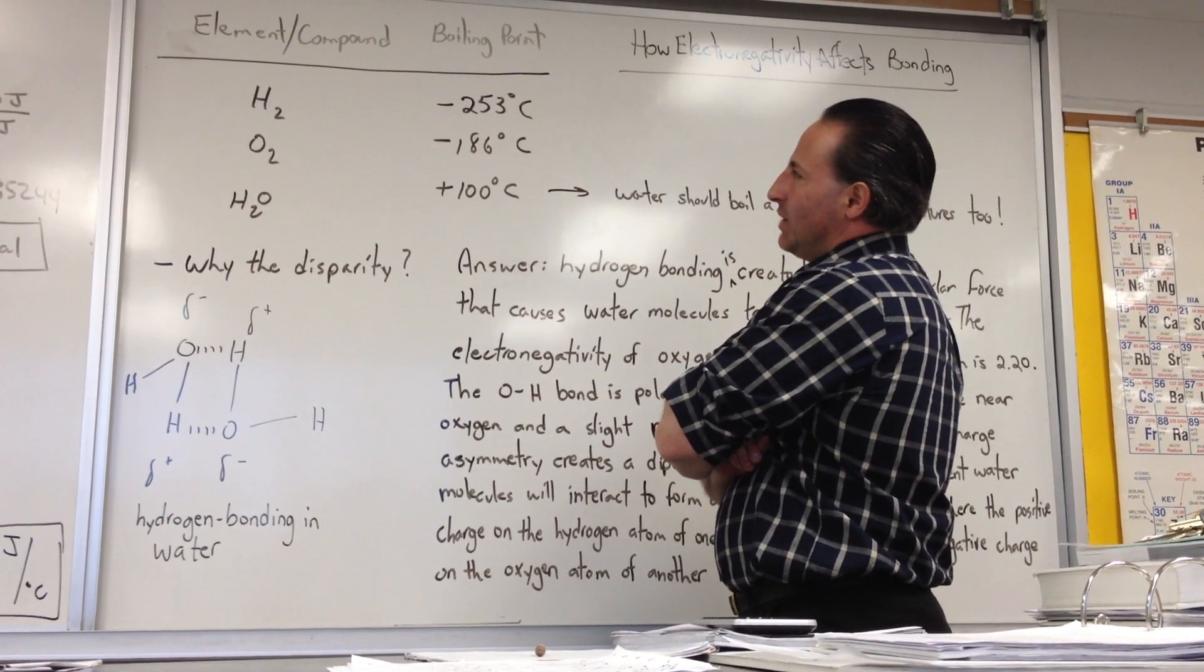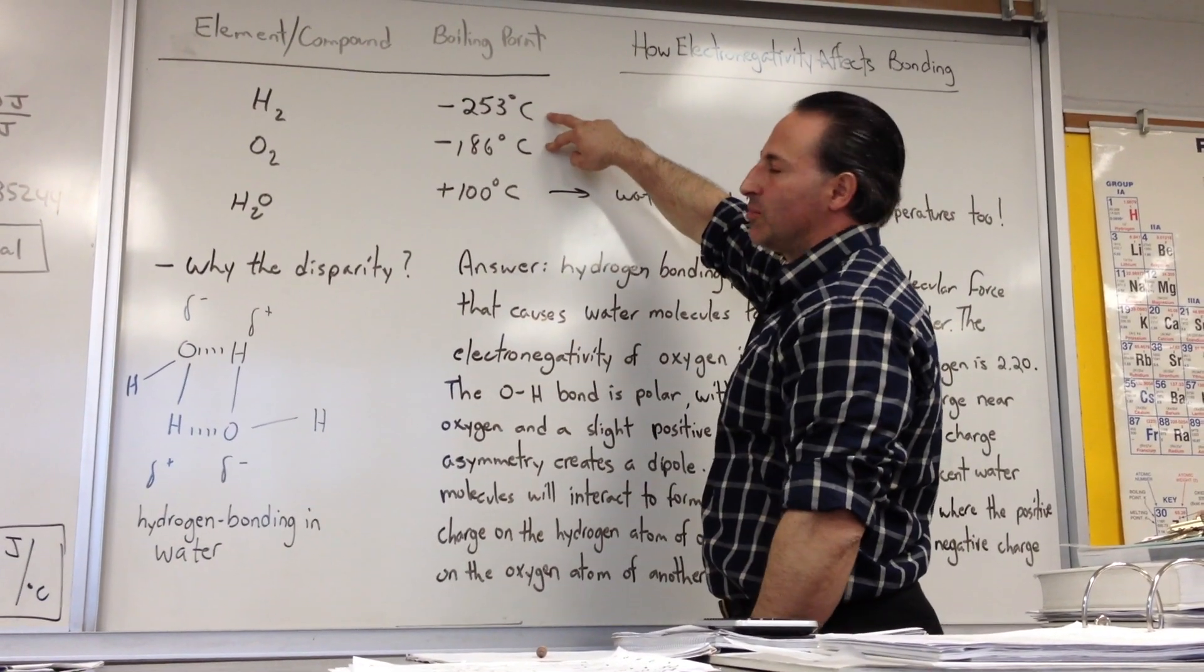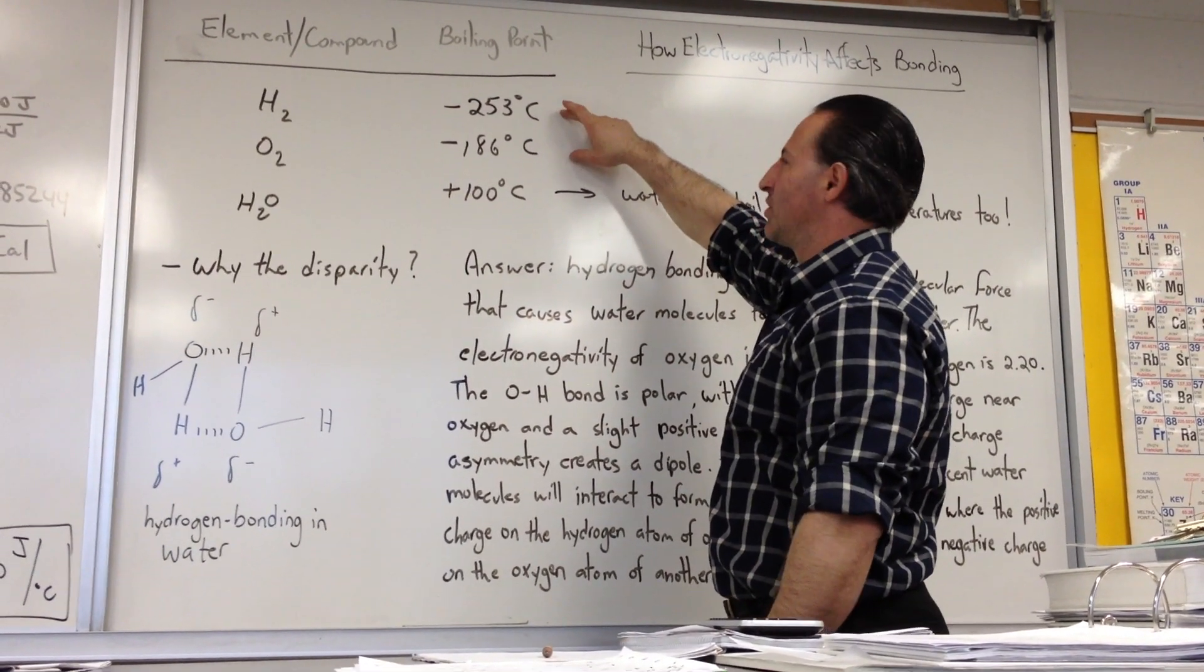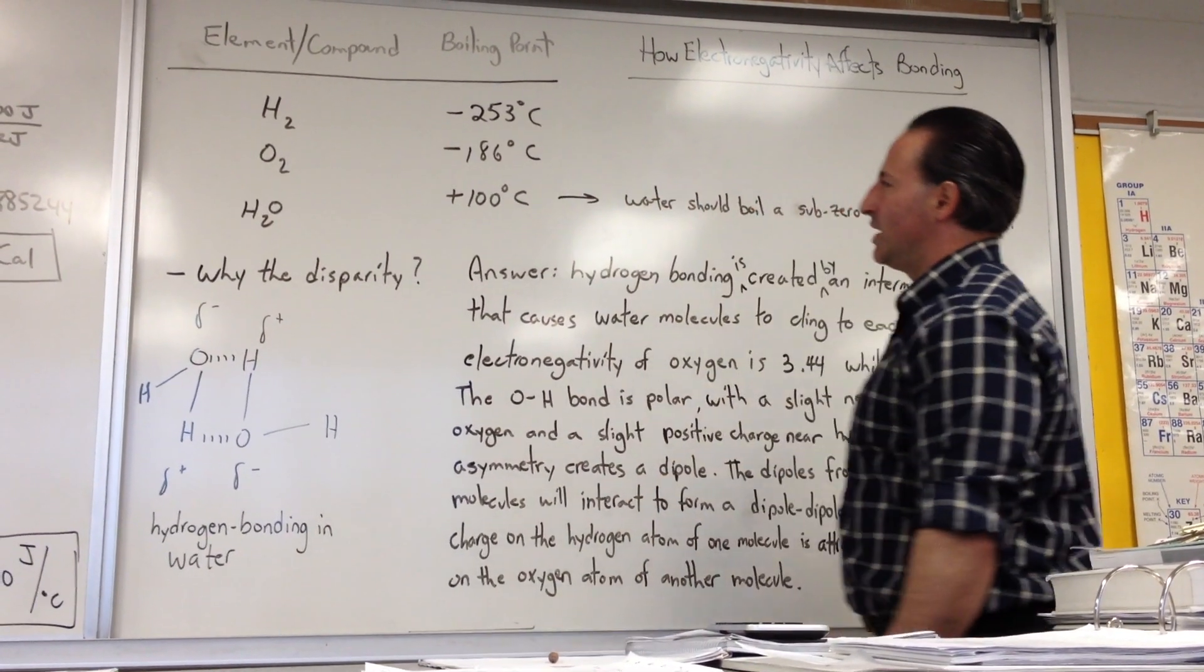I've listed the boiling point of hydrogen and oxygen. Both of them are sub-zero boiling points. Hydrogen boils at minus 253 degrees Celsius, oxygen boils at minus 186.